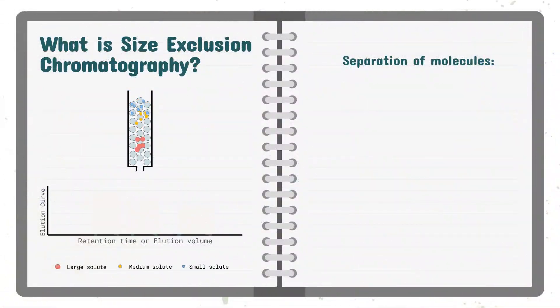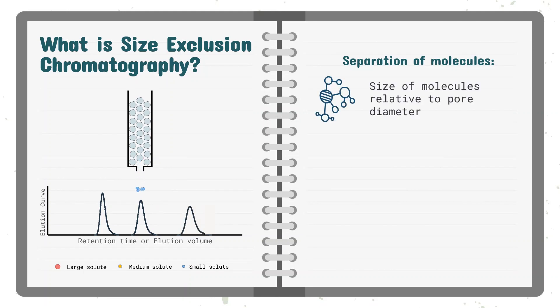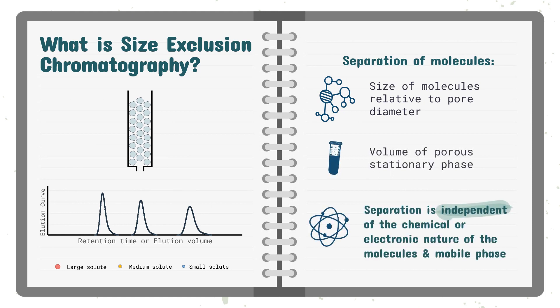Gel permeation chromatography, more commonly known as size exclusion chromatography, is a chromatographic method that separates molecules based on their effective size relative to the pore diameter and volume of the stationary phase of the column. The separation is independent of the chemical or electronic nature of the molecules and their mobile phase carrier.